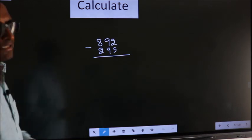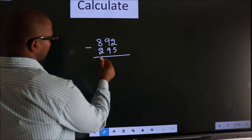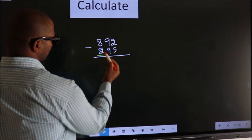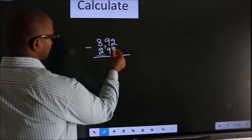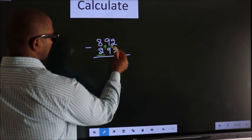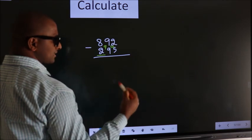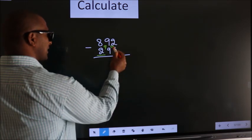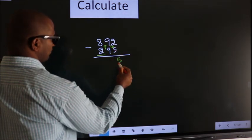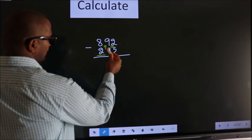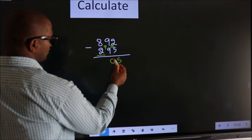See, we should leave the first digit, and here you write 9, here you write 10. Next, 10 minus 5 equals 5. 9 minus 9 equals 0.